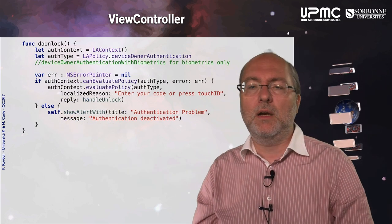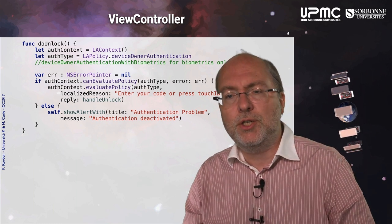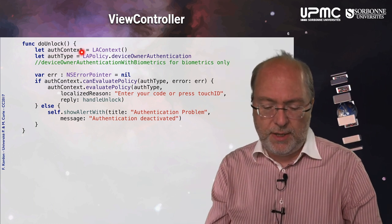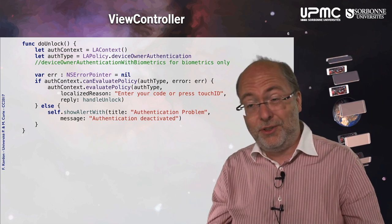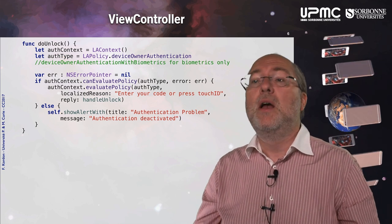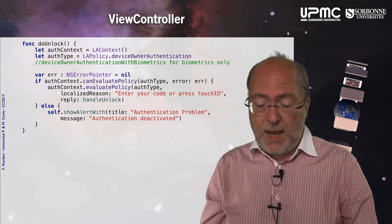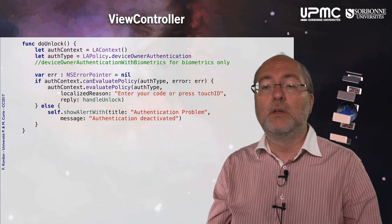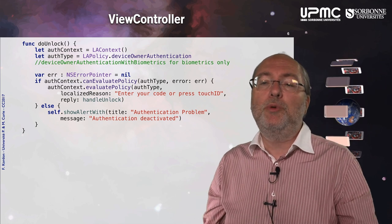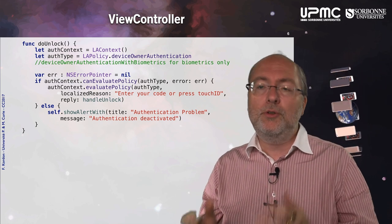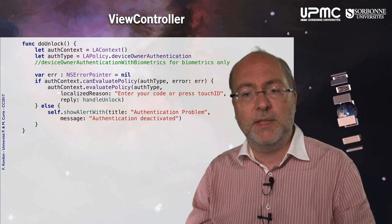When I do the unlock, I will activate authentication. Here I create a context and I decide that the authentication type will be owner authentication. I could use the biometric-only constant, but then it will fail on a terminal that doesn't have Touch ID or other biometric mechanisms.